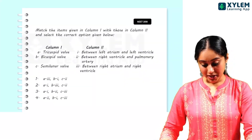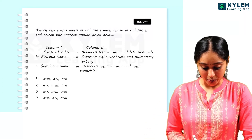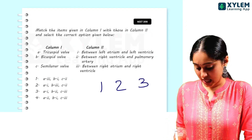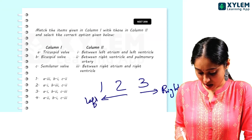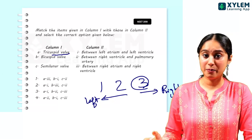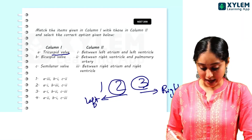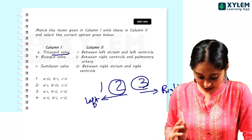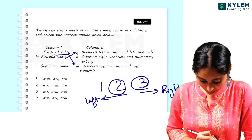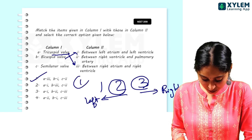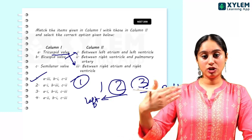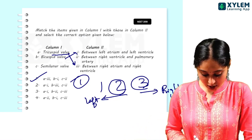NEET 2018 match the following question: tricuspid valve is between the right atrium and right ventricle. Bicuspid valve is present between the left atrium and left ventricle. Semi-lunar valves are present at the junction where any artery joins a ventricle. The answer is option 1.